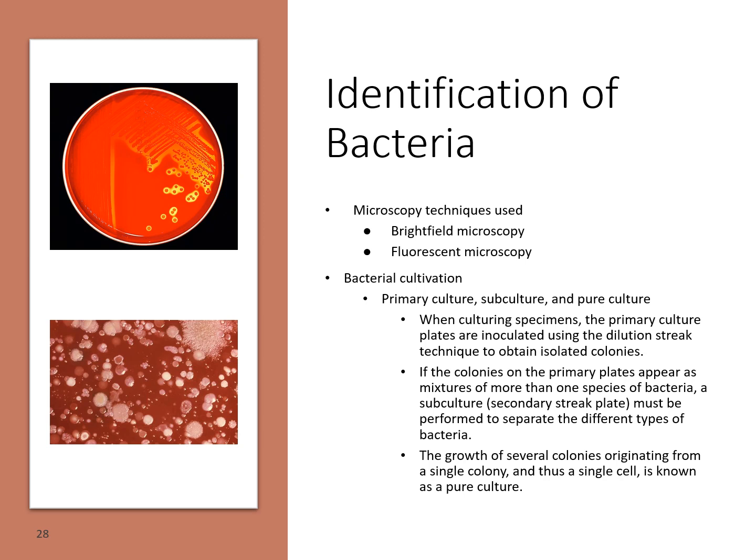If the colonies on the primary plate appear mixed with more than one species of bacteria, you need to do a subculture on a second plate. You would pick one particular suspicious organism and streak it onto another plate to isolate it. If the growth pattern is just a single colony type, it is known as a pure culture — as seen in the top image where just one particular organism is on the plate.